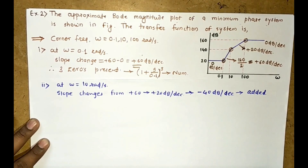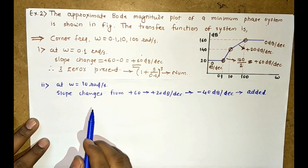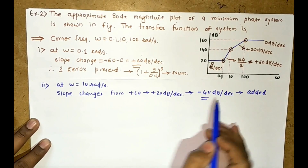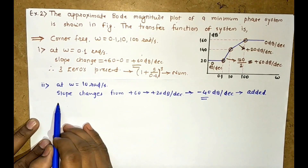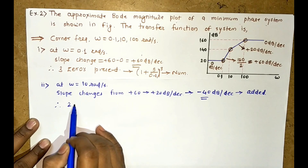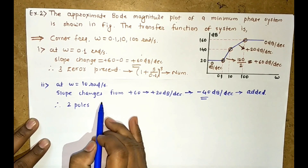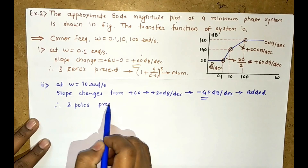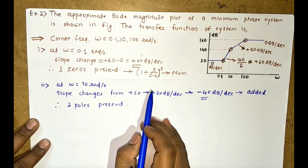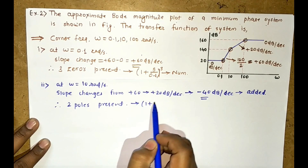Since minus 40 dB per decade slope is added, two poles are present at corner frequency 10. So (1 + S/10)² is noted at the denominator, because poles appear in the denominator.